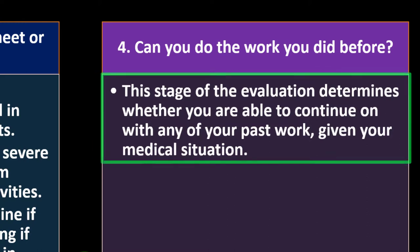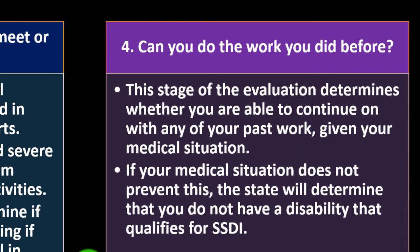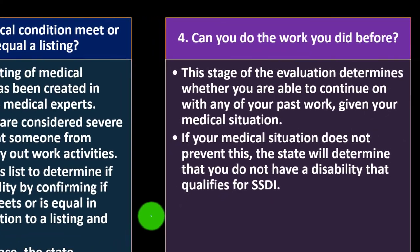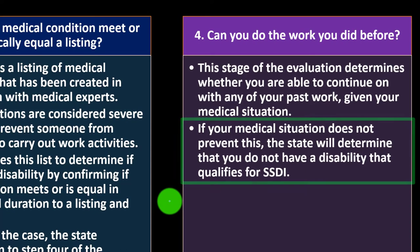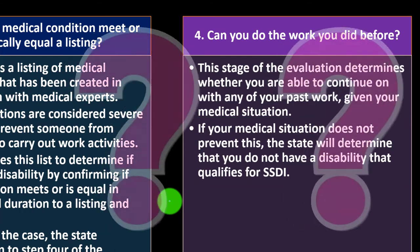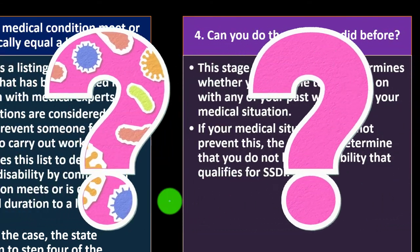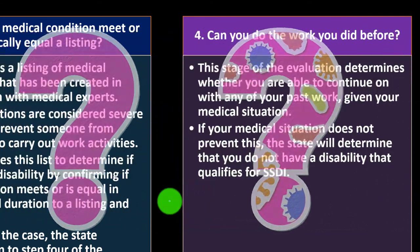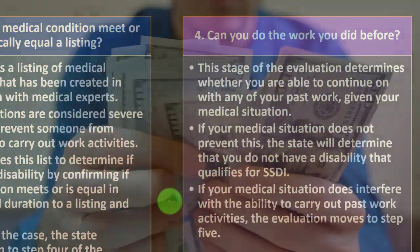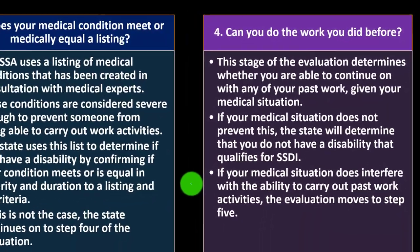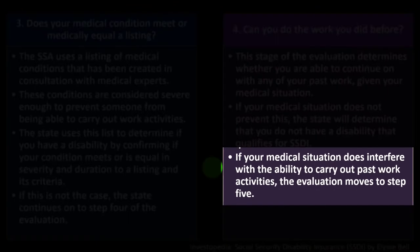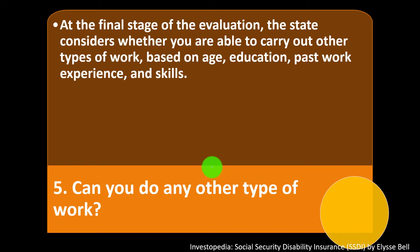Step four: Can you do the work you did before? This stage determines whether you are able to continue with any of your past work given your medical situation. If your medical situation does not prevent this, the state will determine that you do not have a qualifying disability, since you could still earn money. If your medical situation does interfere with past work, the evaluation moves to step five.